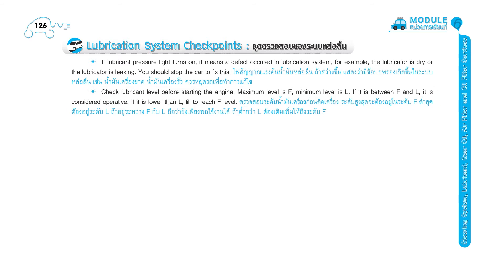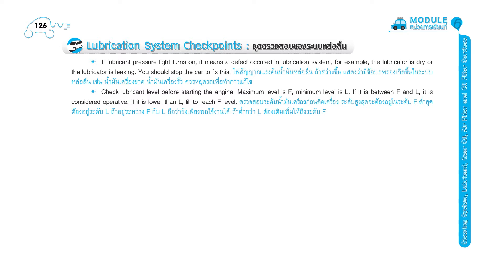5. Check lubricant level before starting the engine. Maximum level is F and minimum level is L. If it is between F and L, it is considered operative. If it is lower than L, fill to reach F level. Check the pressure switch. Check and replace the oil filter when it is expired. Generally, you should replace it together with lubricant.